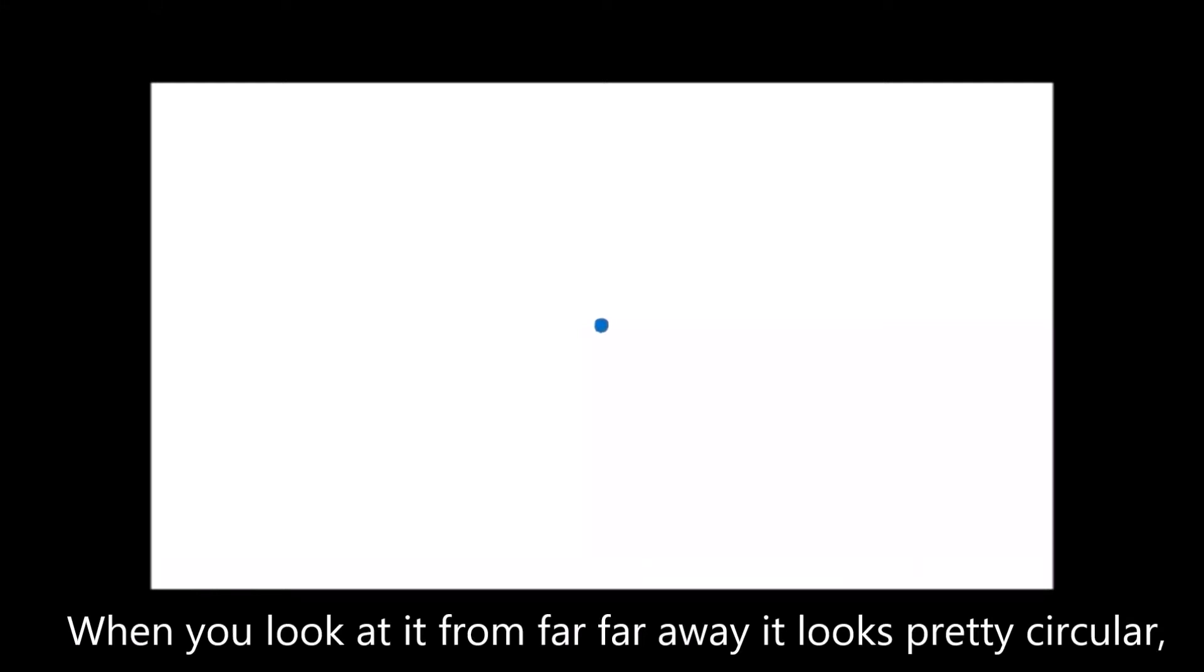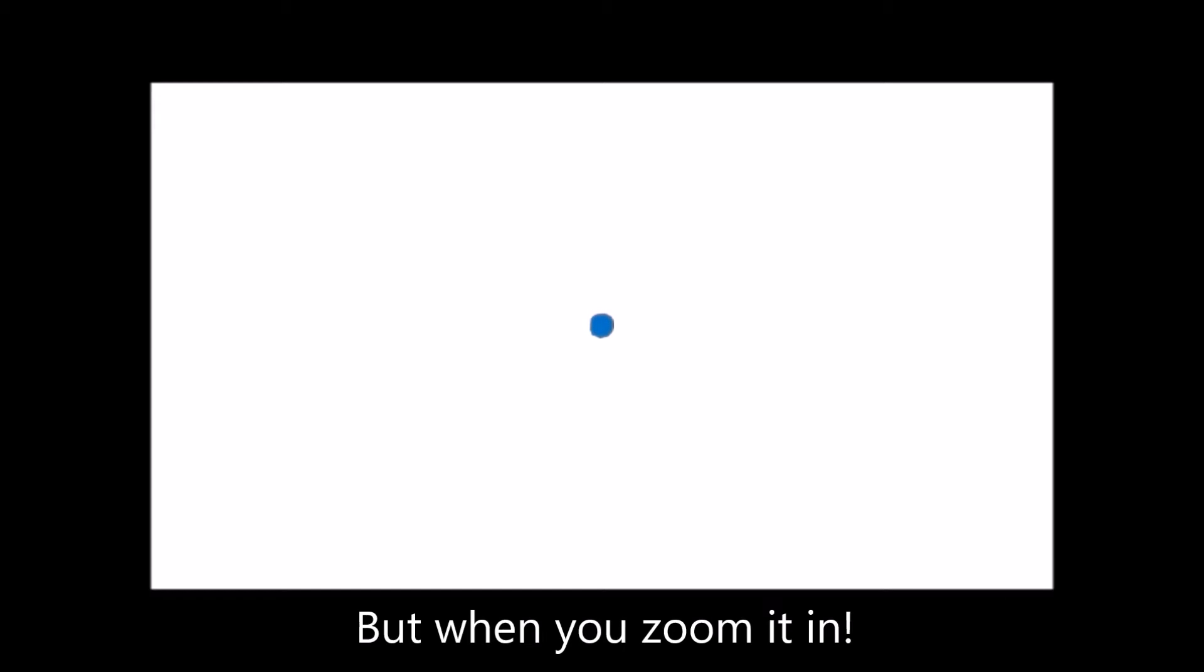When you look at it from far, far away, it looks pretty circular, doesn't it? But when you zoom it in, does it still look like a perfect circle?